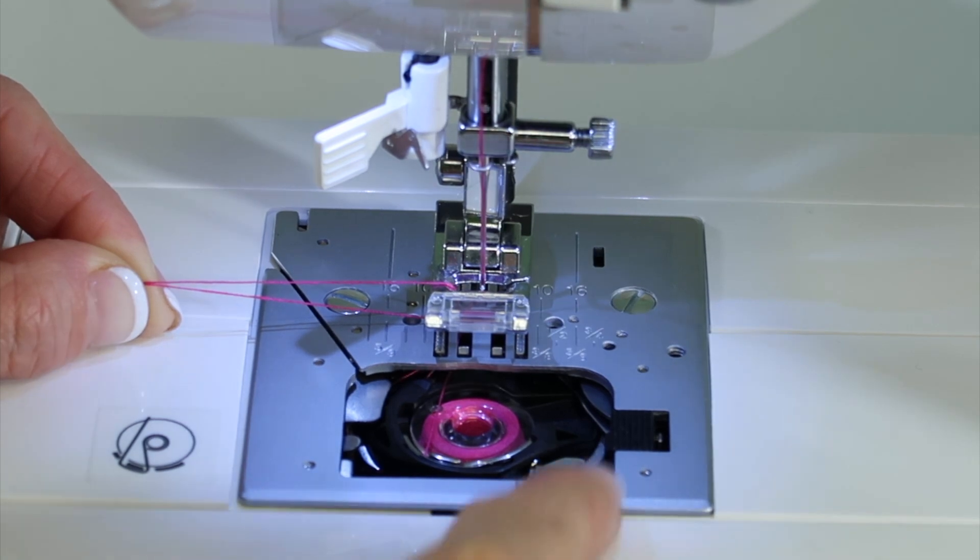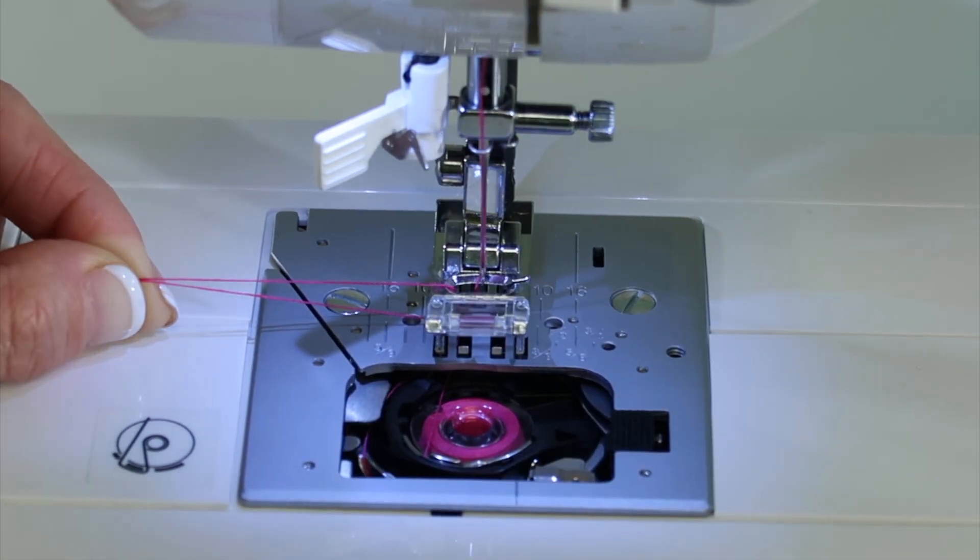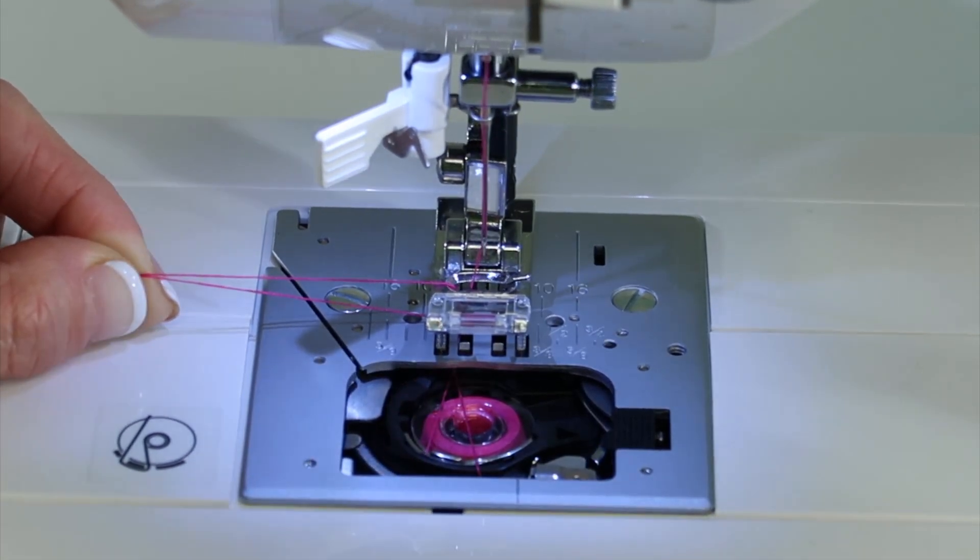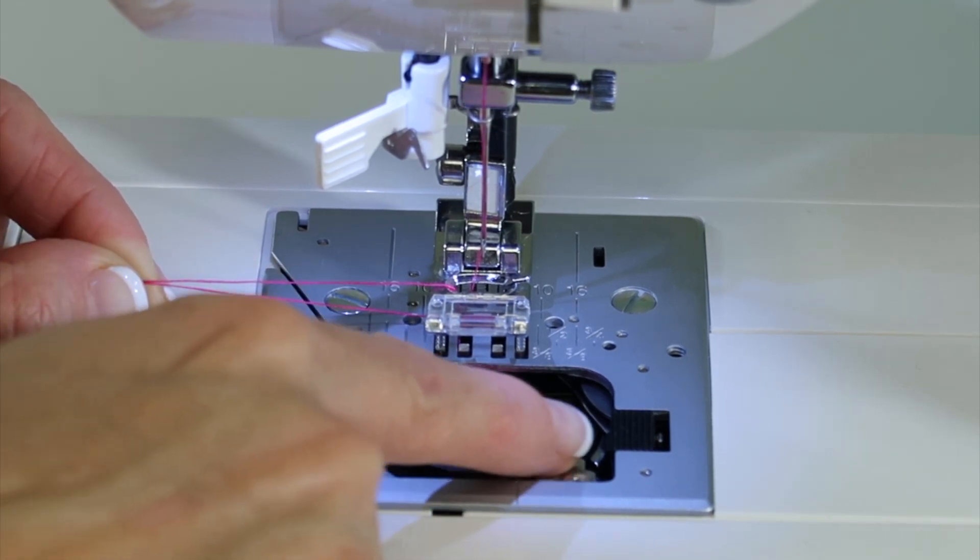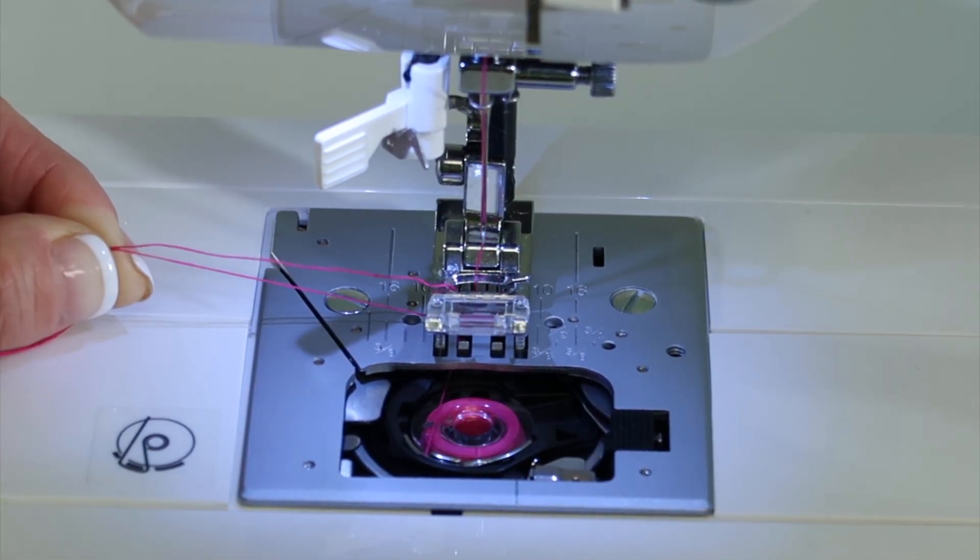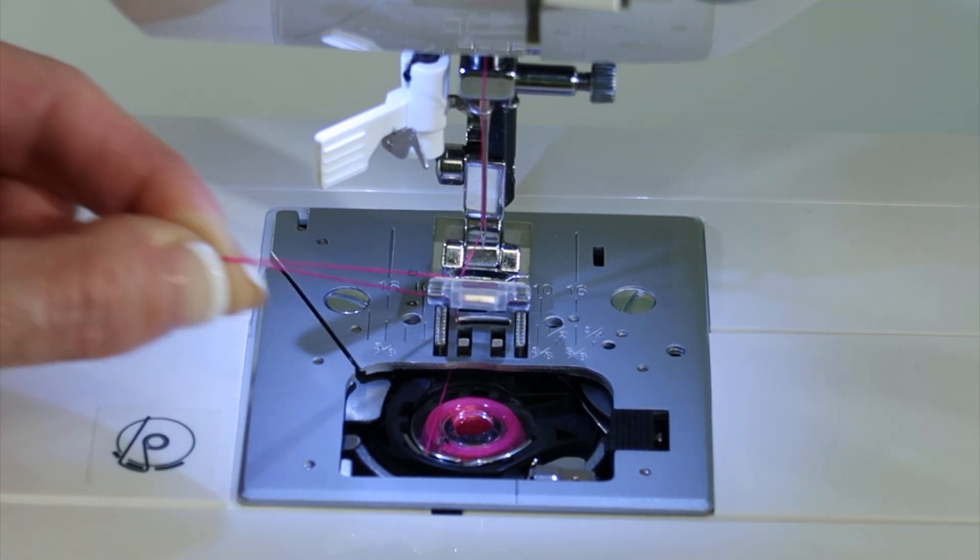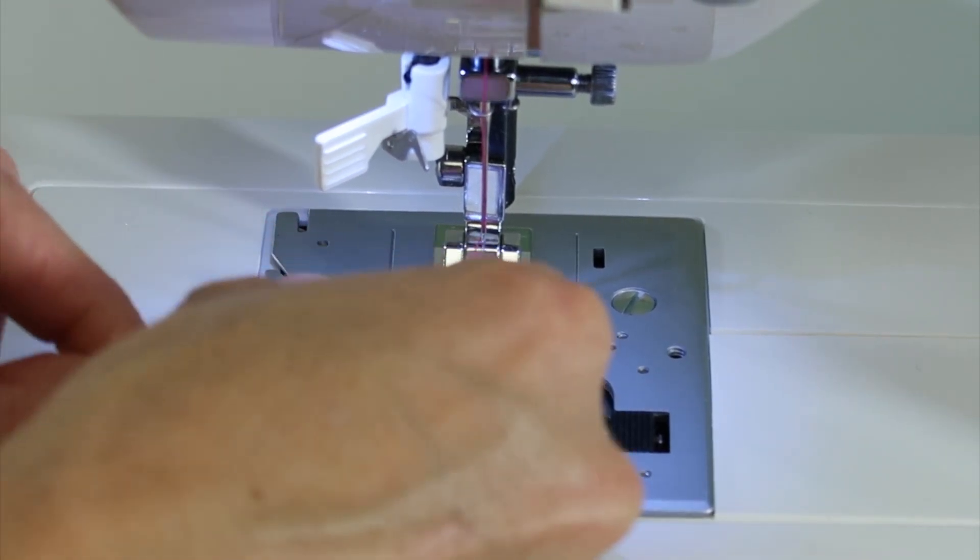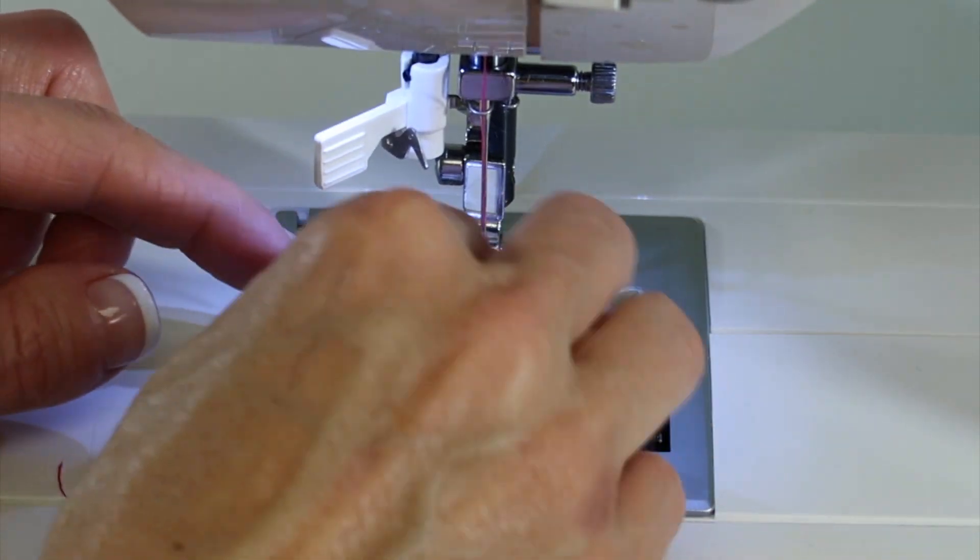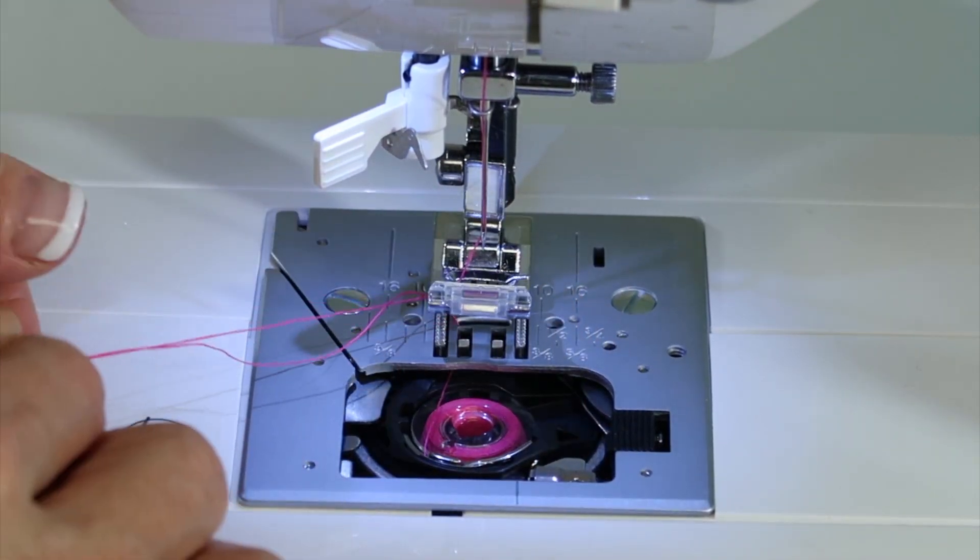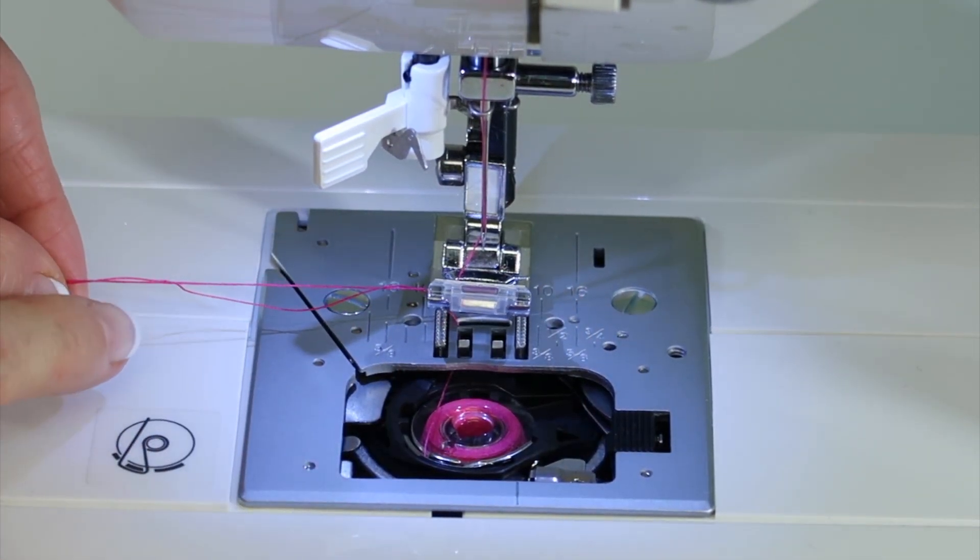You will find that there is a rotating area, a hook that drags that bobbin all the way around the black bobbin case. As the needle gets all the way back to the highest position, you'll see that we actually have a stitch. It is there, here we go, a stitch actually formed or a twist in these threads.